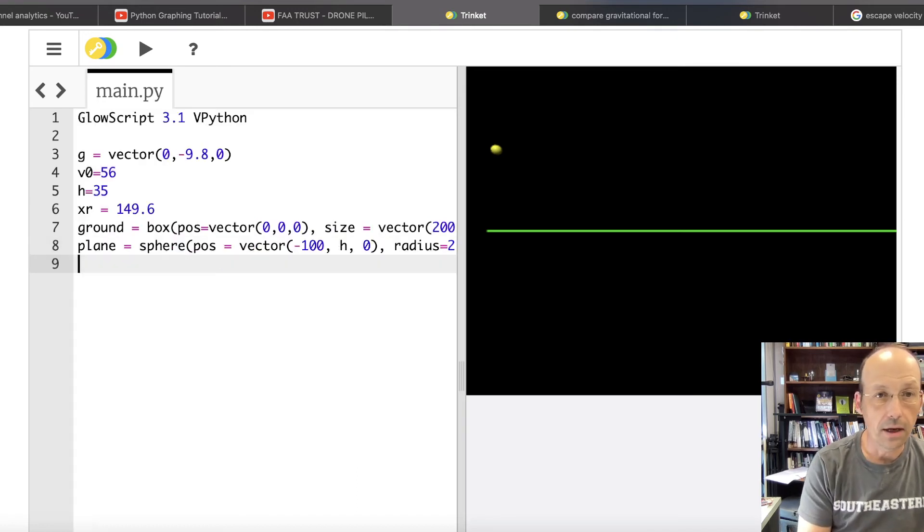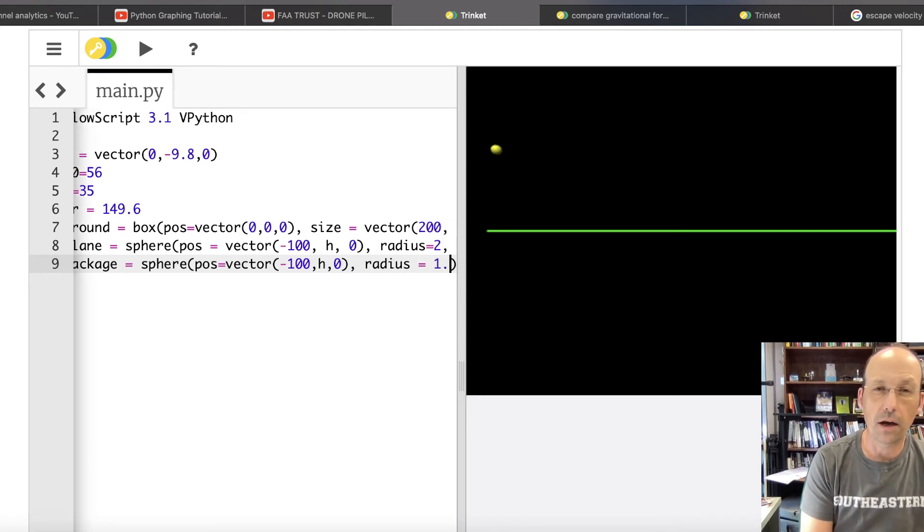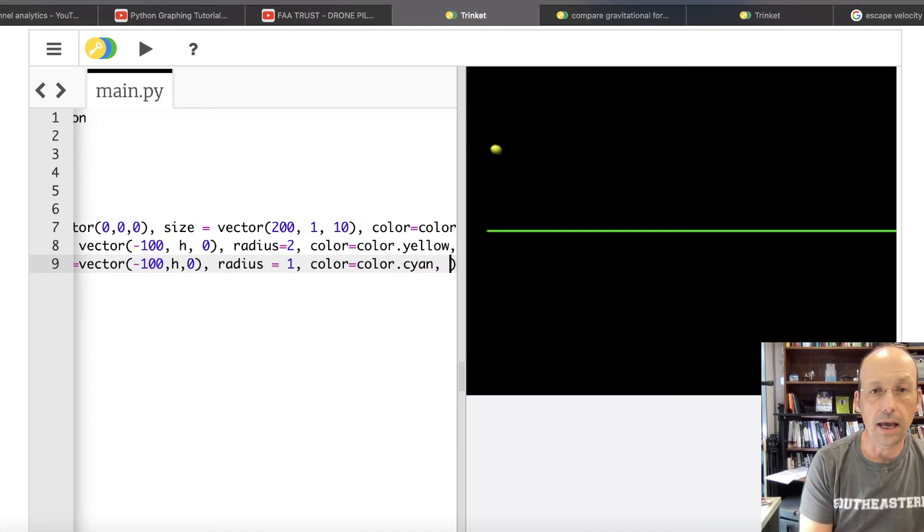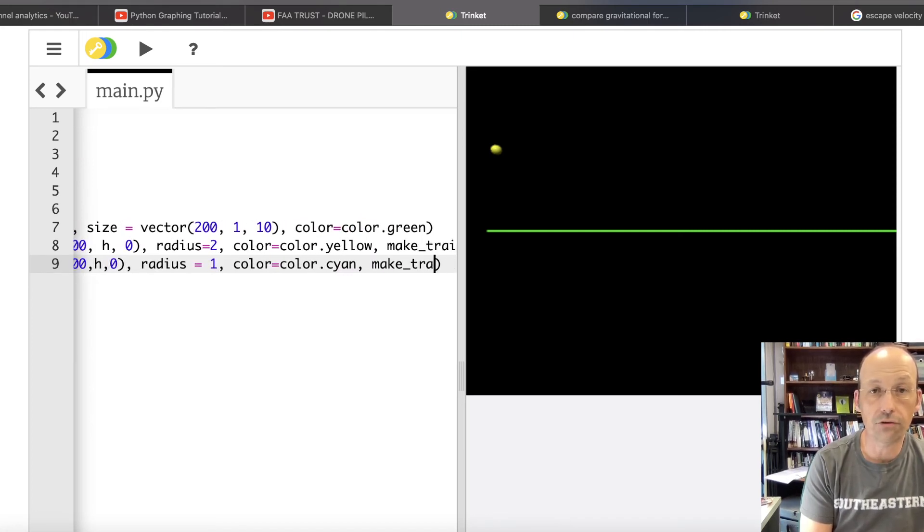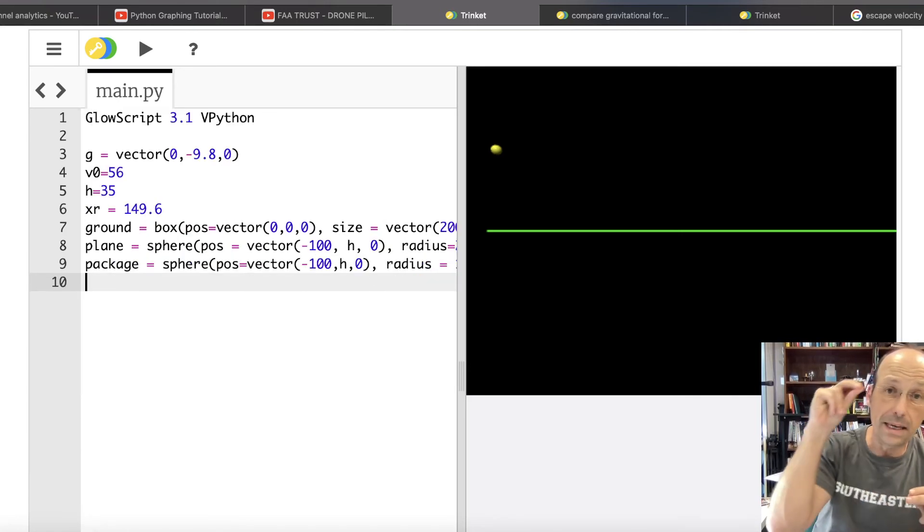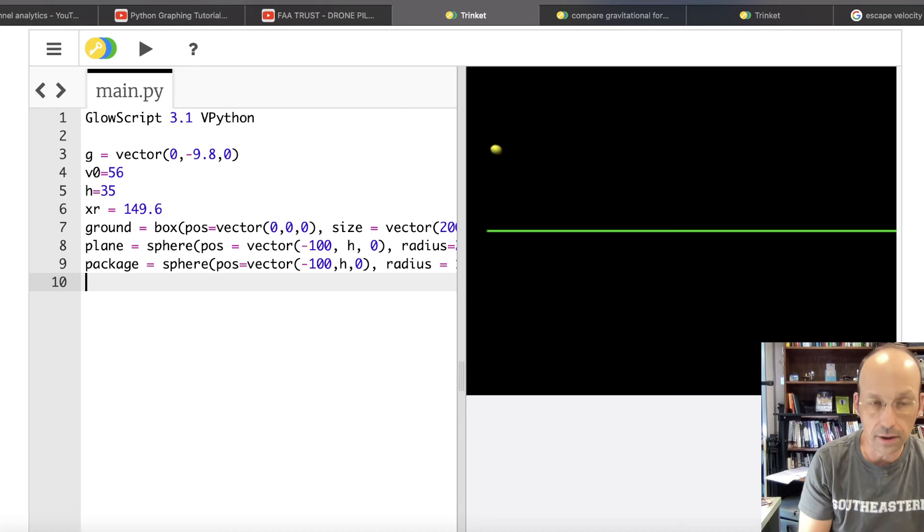Let's make the package now. Let's say, it's called package. It's a sphere. It's position is also the same thing. It's in the same, it's the same as the plane. And the radius, it should be a little bit smaller. Let's make its radius one. Let's make it one. And make it cyan. Color equals color dot cyan. And make trail equals true. Not trial. Trail equals true. Now you're not going to be able to see it because it's going to be inside the plane. So I'm not even going to run it.